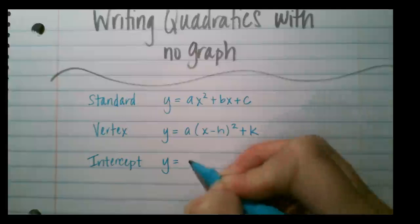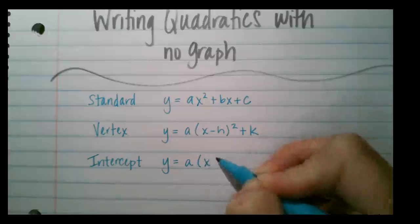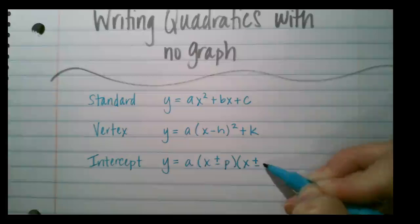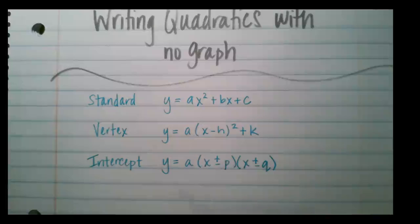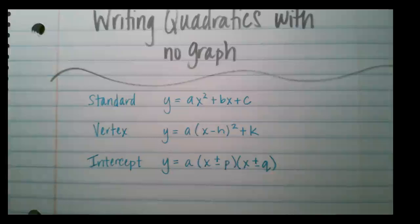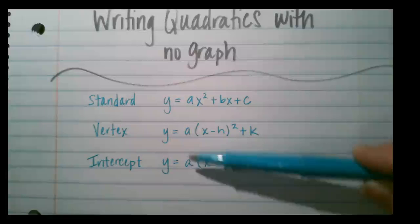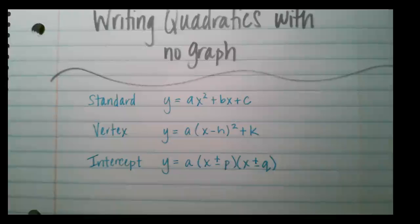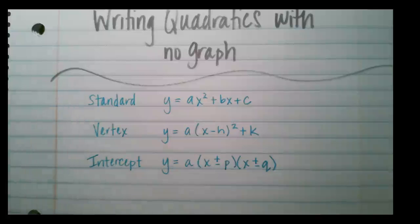Then we have intercept form, which is also known as factored form, and that is a times (x plus or minus p) times (x plus or minus q). The a value is present in all three forms and is going to tell us the stretch or shrink as well as whether the parabola opens up or opens down.